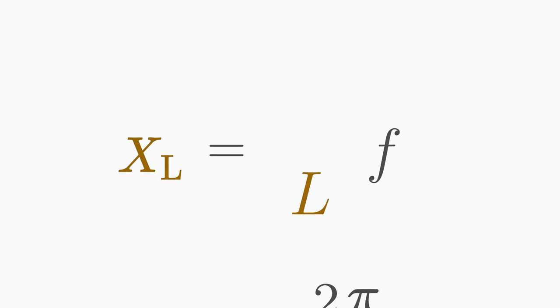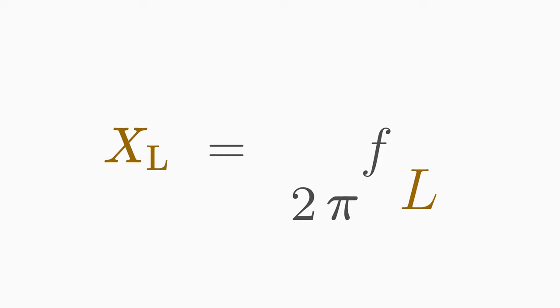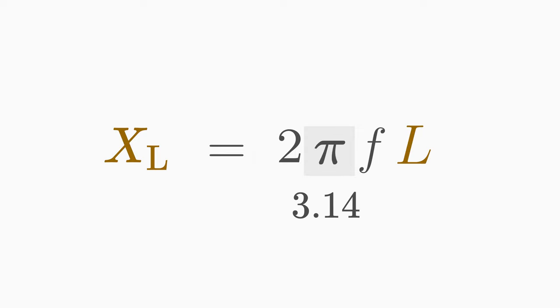You can easily calculate the inductive reactance. You need the AC voltage frequency f and the inductance L of the coil. X is equal to 2 times pi times f times L. Pi is a mathematical constant with the value 3.14. The unit of inductive reactance is ohm. By the way, 2 pi f is often combined to the angular frequency ω.